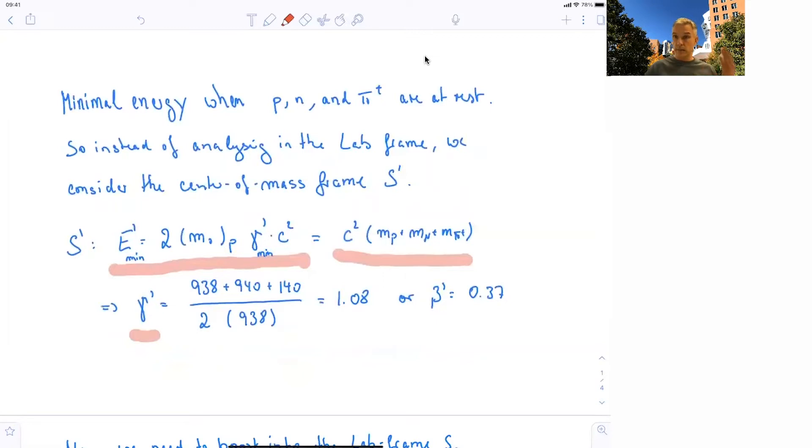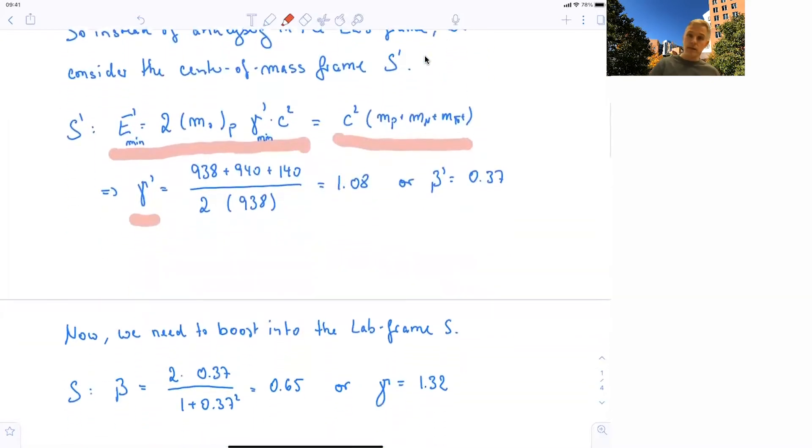Note, this is the gamma, relativistic gamma, or the velocity beta of the protons, two protons in the center of mass frame. So we're not quite there yet with our answer. The answer then needs to be boosted back into the laboratory frame. And we have seen how we can do this for velocities. In general, we find beta in the laboratory frame is two times 0.37 over 1 plus 0.37 squared, which is 0.65.